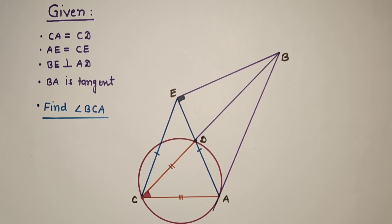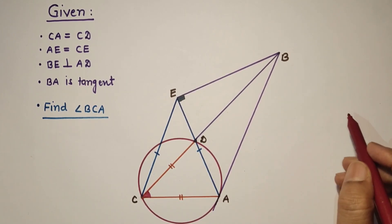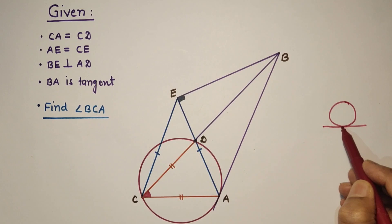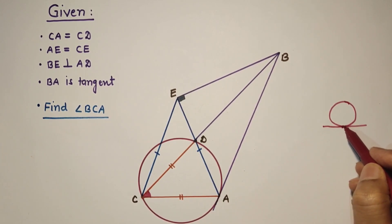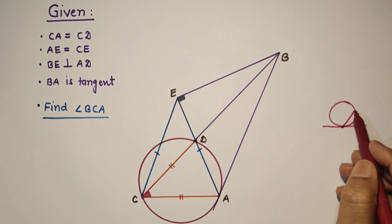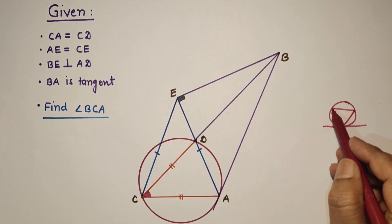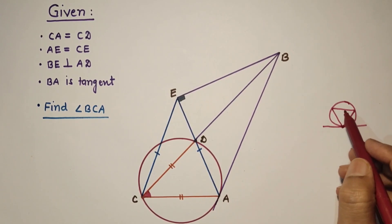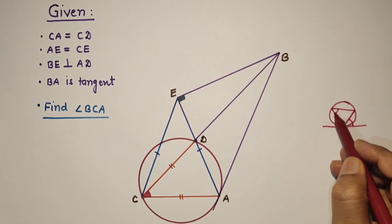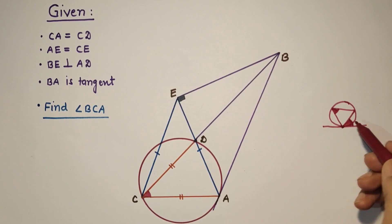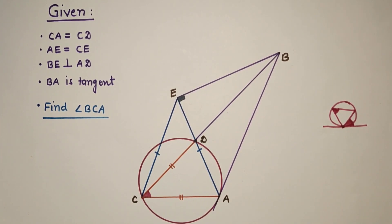Before solving this question, we will discuss two concepts used in the solution. First: if a tangent touches a circle at a point, and from that point of contact there is a chord, then the angle between the tangent and the chord equals the angle subtended by that chord in the alternate segment. This is the tangent-chord theorem.